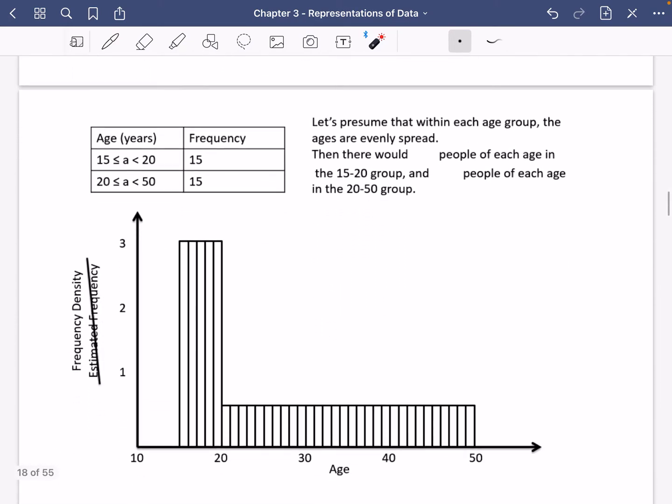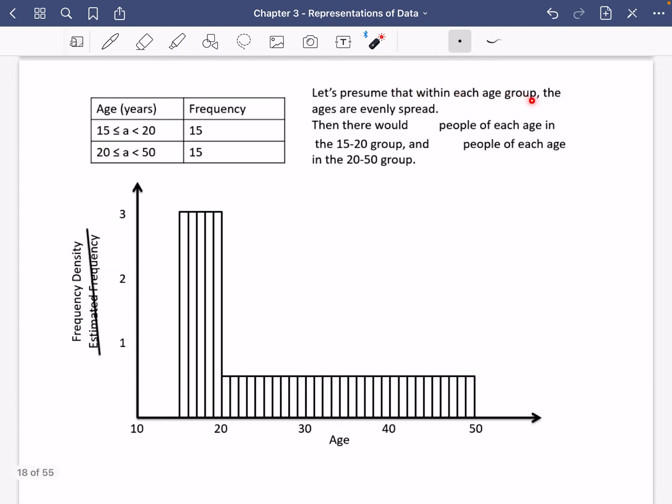So the way that we might do this is what we would do is we would presume that within each age group, the ages are evenly spread. So that would mean that in this first 15 to 20 group, if we've got an age bracket of five, and there are 15 people, we would imagine that there would be three people of each age in a 15 to 20 group. And then for the 20 to 50 group, that's 30 years that we've got here, and 15 people. So per year, we would do 15 divided by 30, we would imagine there to be 0.5 people of each age in the 20 to 50 group. And so instead of plotting the frequencies along the side, we plot this thing called the frequency density.